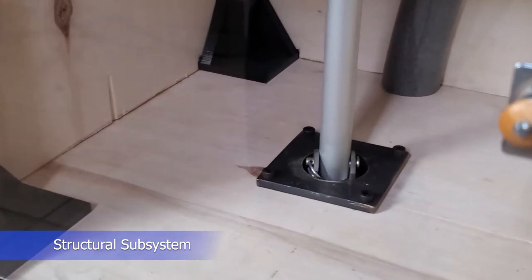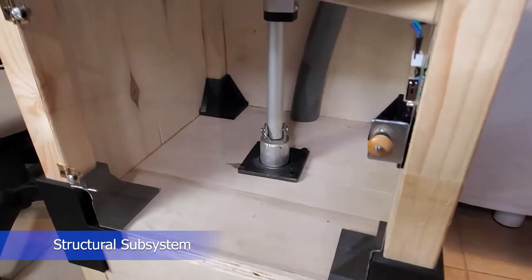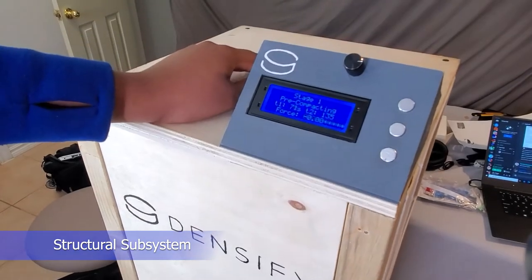Mounted to the same plate, the linear actuator is the source of the compaction aspect of the appliance. Its end features a modified bracket to mount the piston head that makes direct contact with the heated plastic.